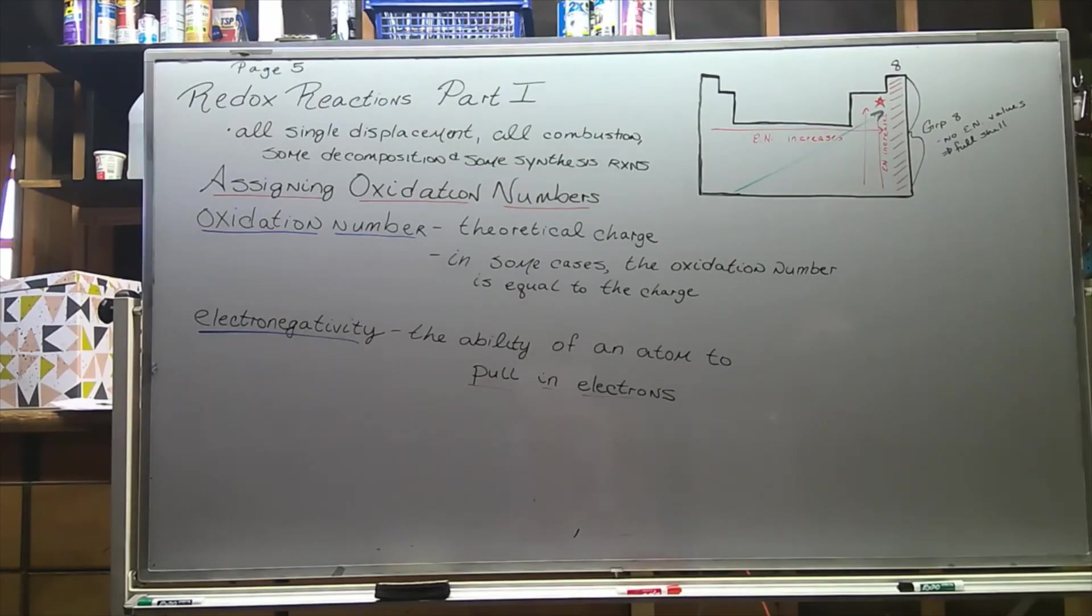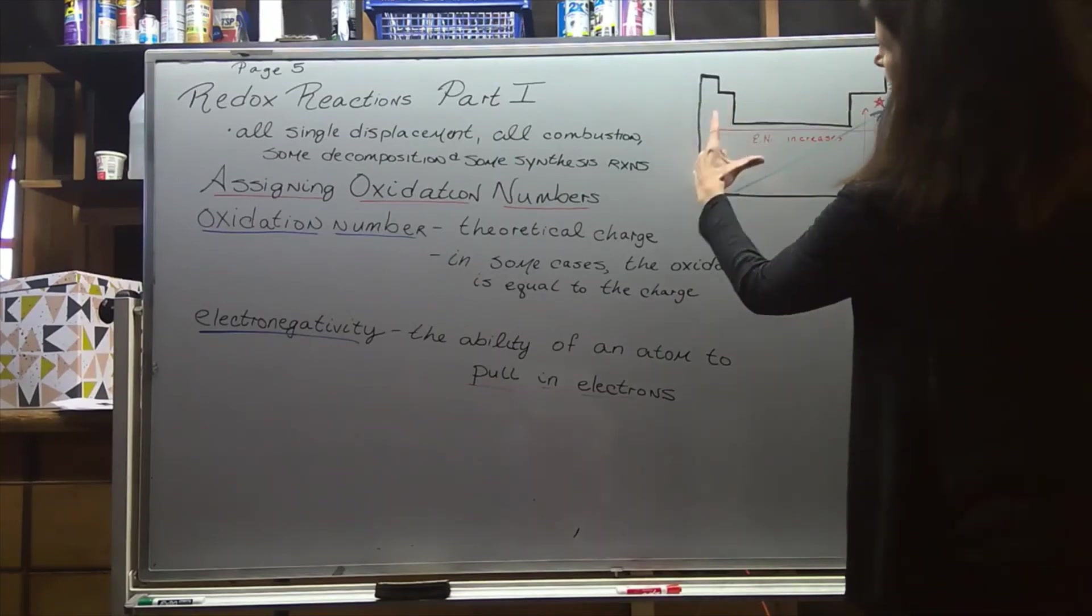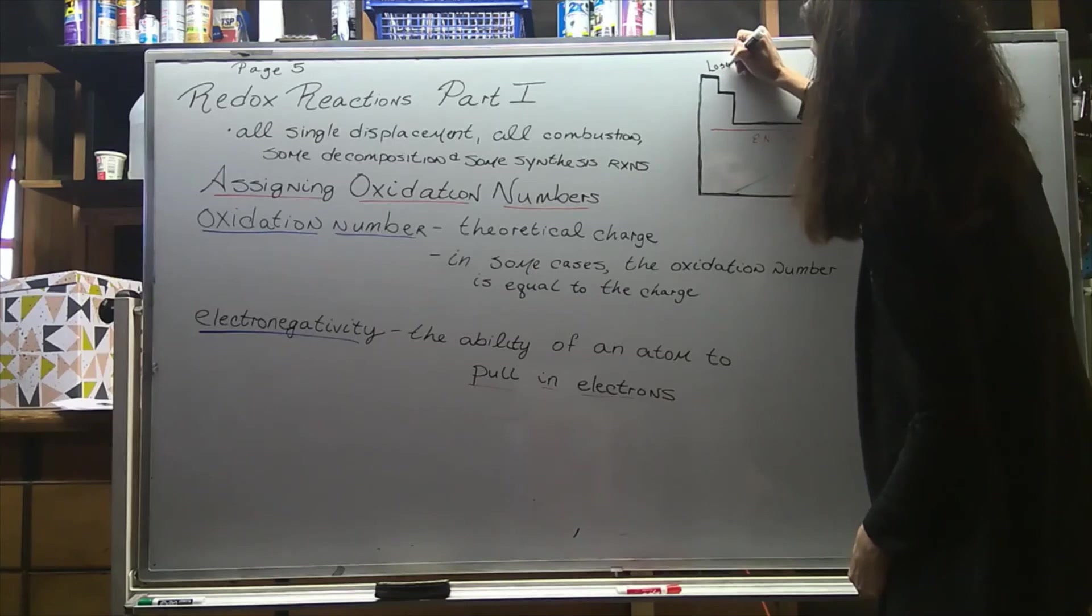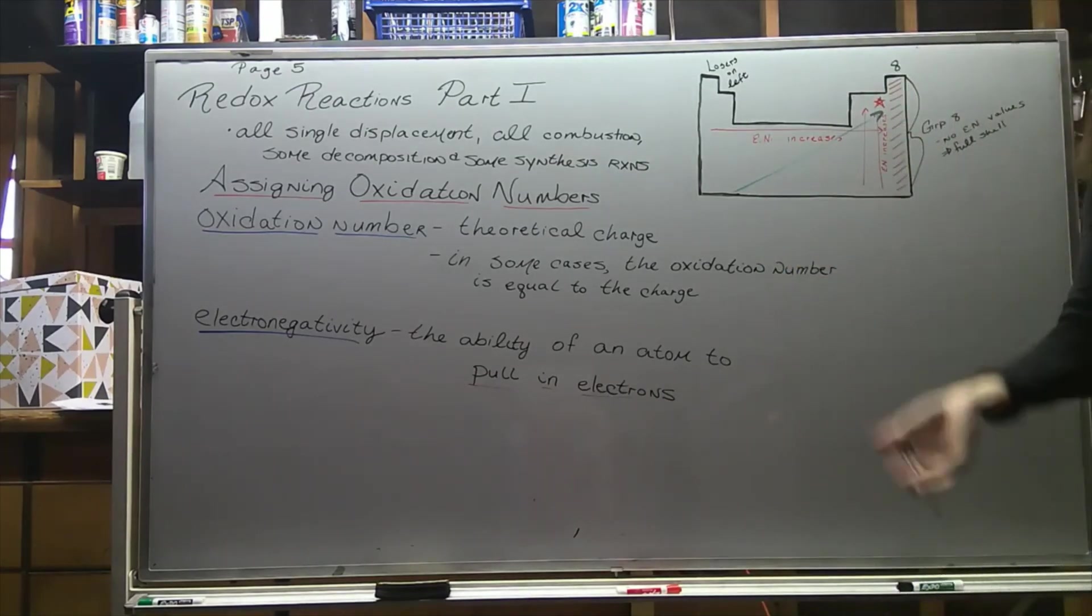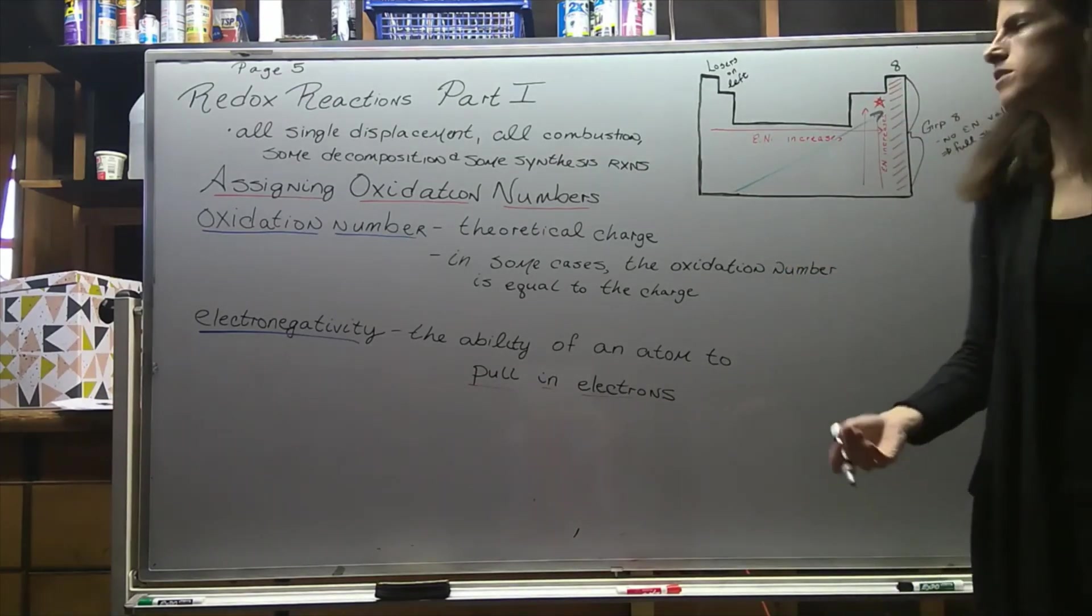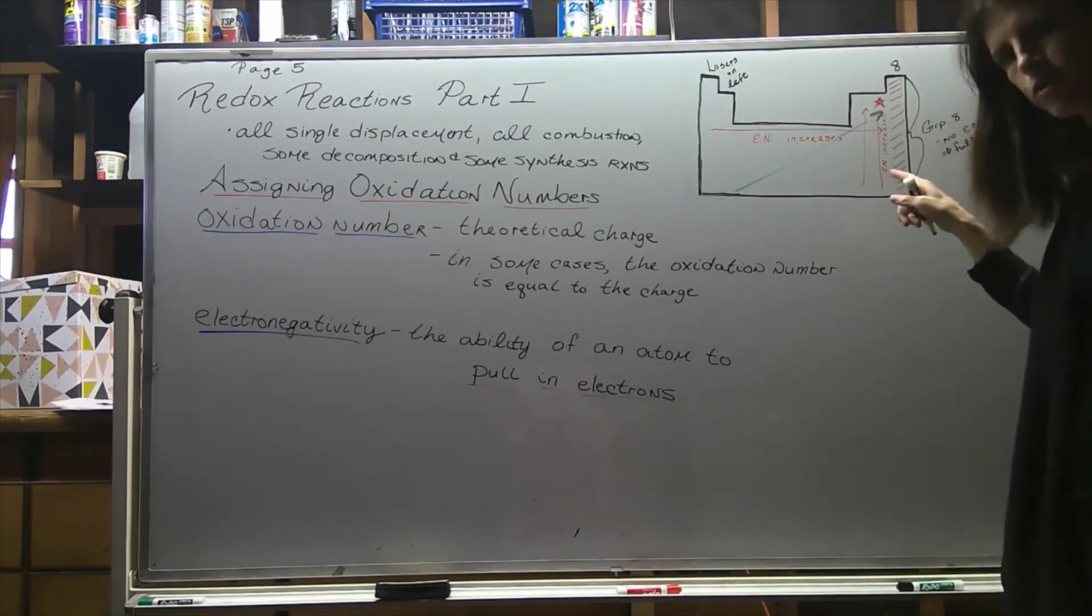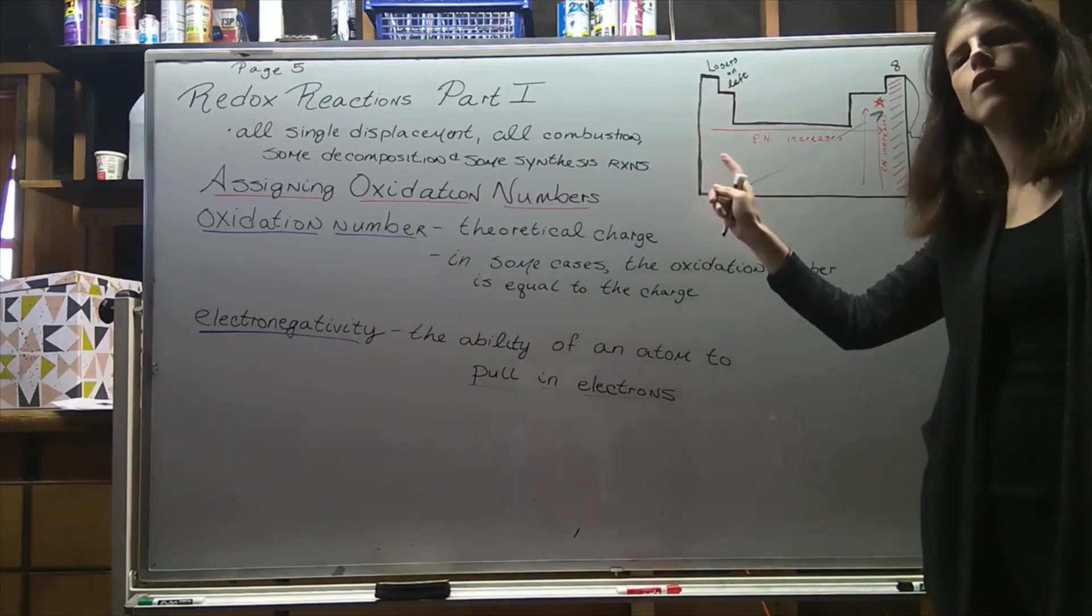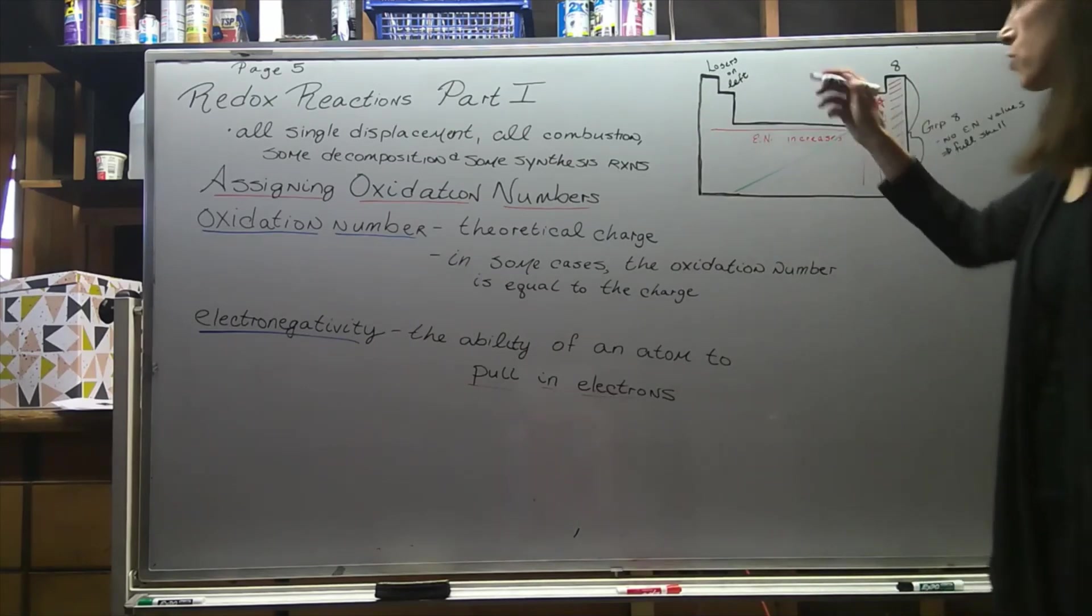Another thing you may have heard me say in lecture is that we got our losers on the left. You've seen that as you've been working on problems. All of our metals always lose electrons to form positive cations - they're losers, they lose the electrons. It goes hand in hand with electronegativity values though. These will be our least electronegative atoms because they have the lowest electronegativity values.